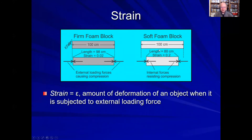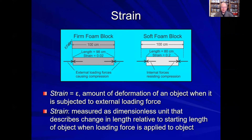Now let's get to strain. Strain is a little easier to understand, and it is a dimensionless quantity. Strain, or epsilon, is the amount of deformation that occurs in an object when it is subjected to an external loading force. In this example of a firm foam block 100 centimeters long and a soft foam block also 100 centimeters long: when I apply a set external loading force on the firm block and it goes from 100 centimeters to 98 centimeters, the strain is the change in length — 2 centimeters — over the original 100 centimeters, giving a strain of 0.02. But in the soft foam block, since it shortens by 20 centimeters, its strain will be 0.2, since 20 divided by 100 equals 0.2.